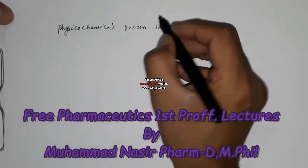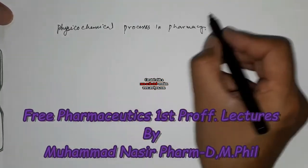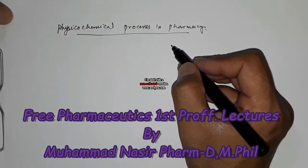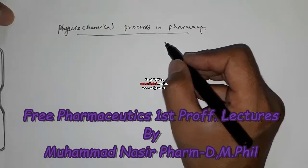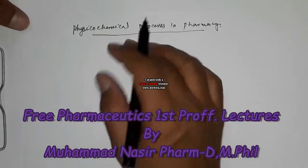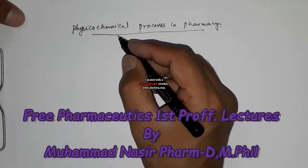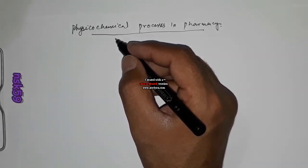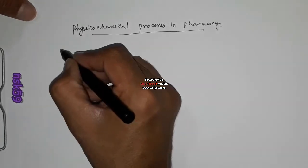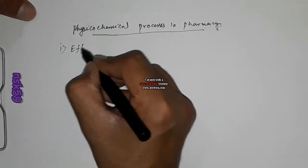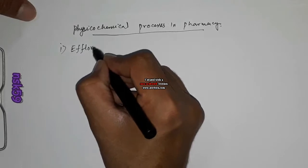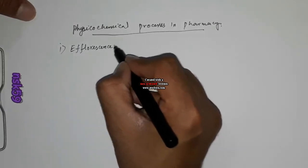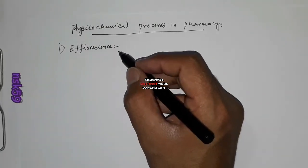We will discuss some important physical chemical processes in pharmacy. We will have a short review of these physical chemical processes for the purpose of exams, as these different processes are very important from the examination point of view. The first physical chemical process is efflorescence.